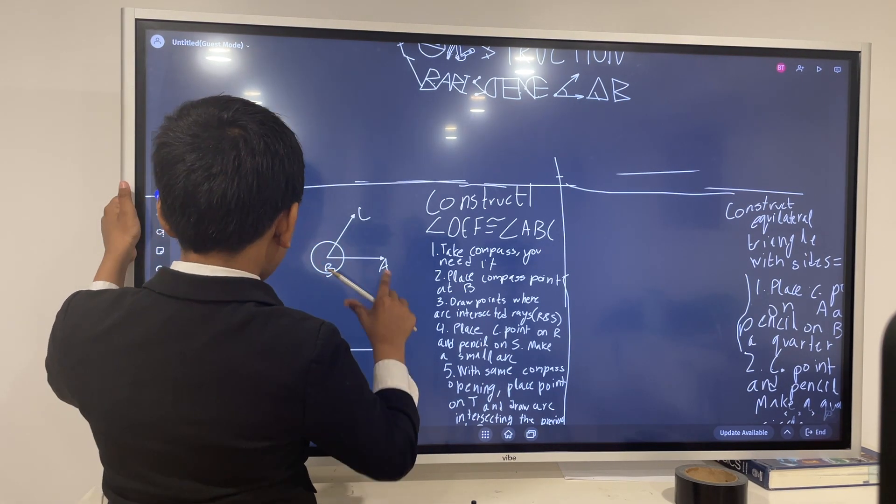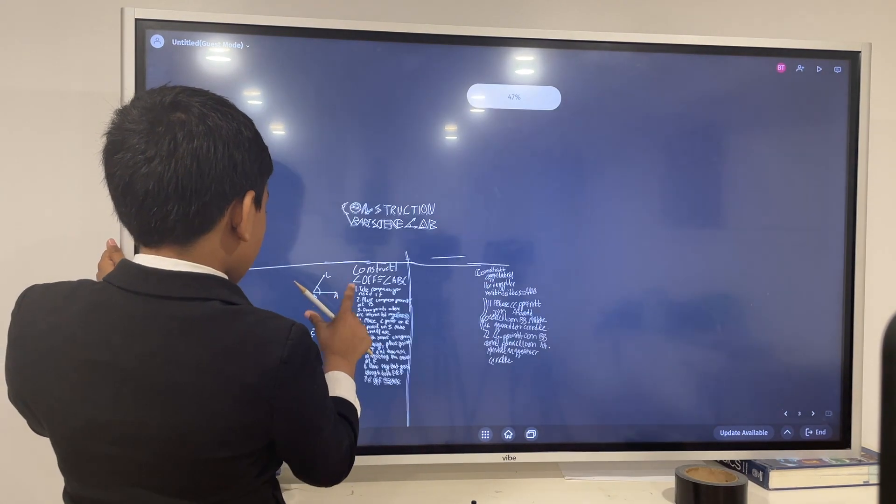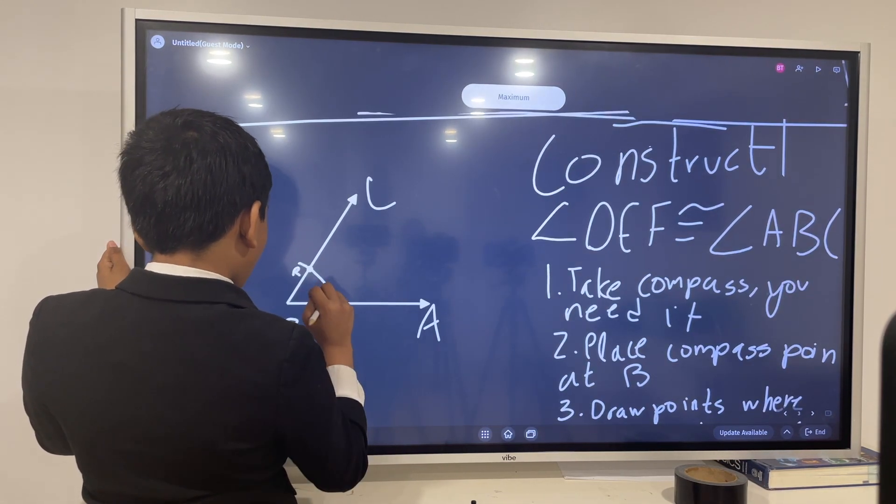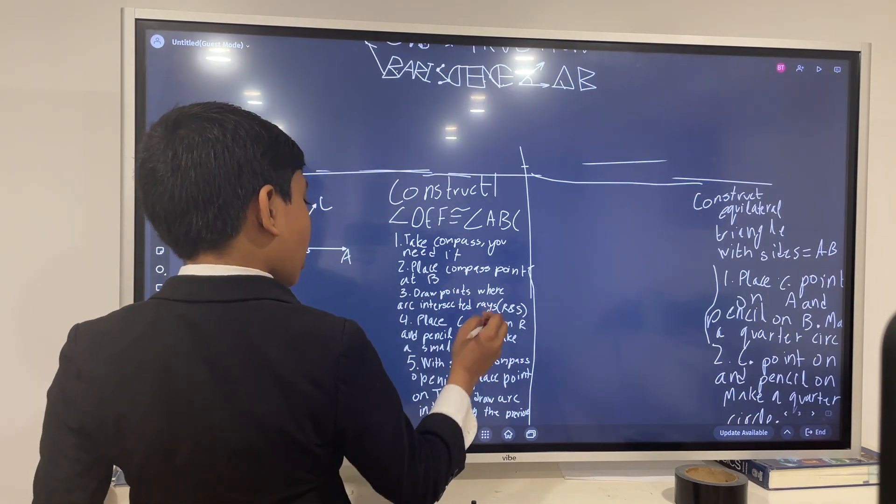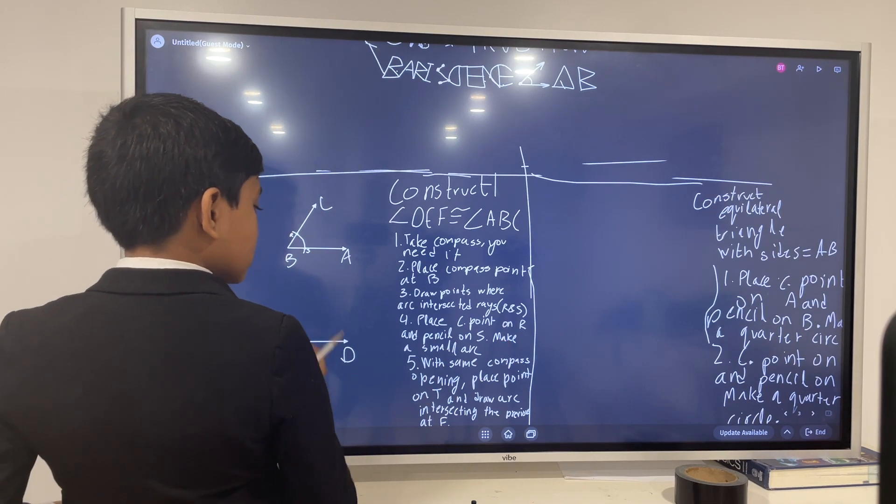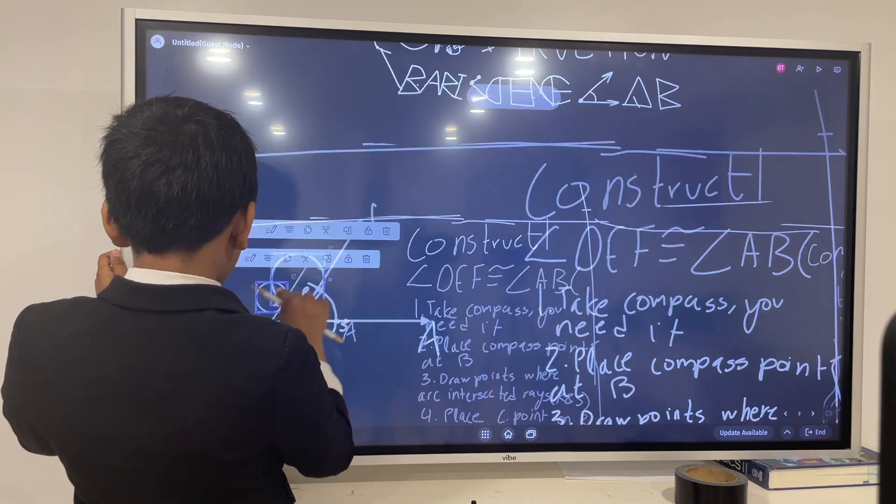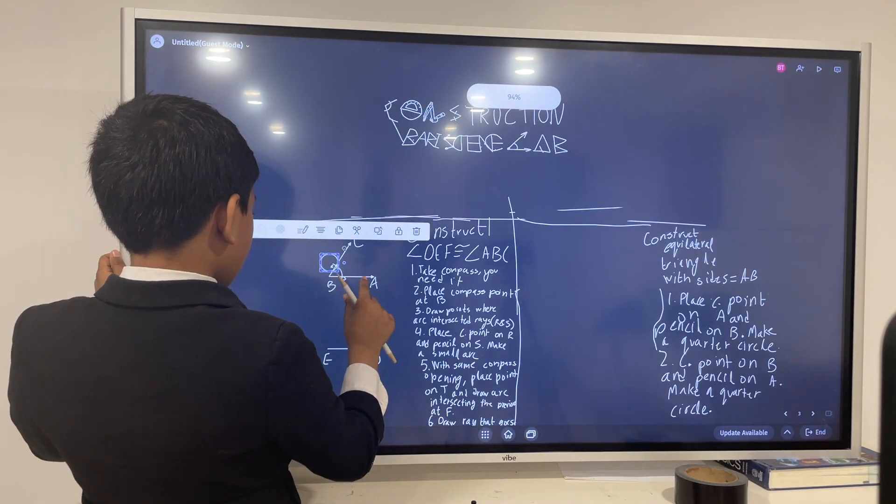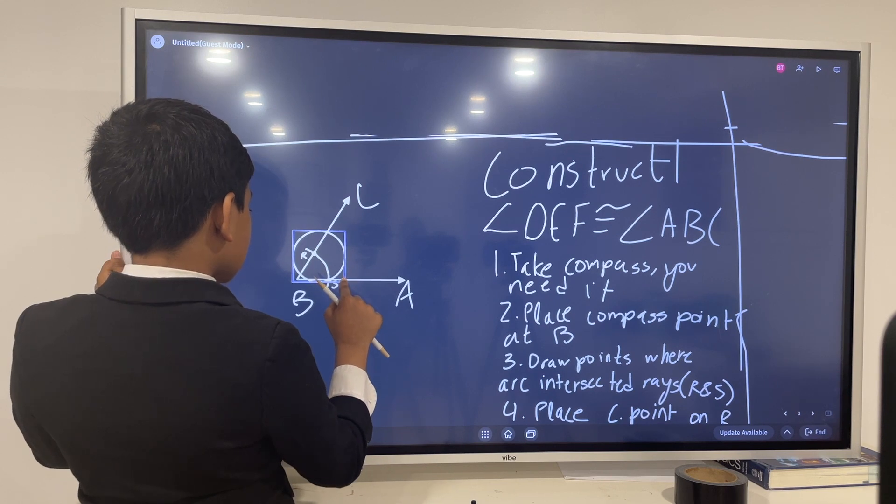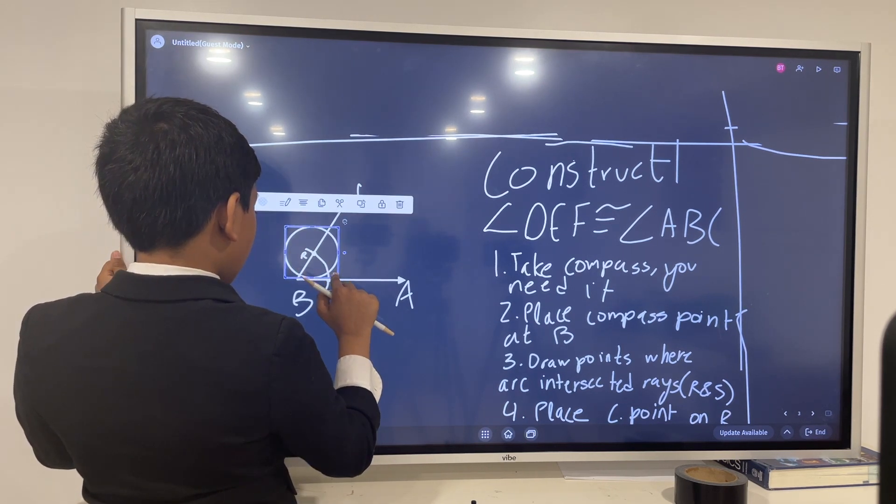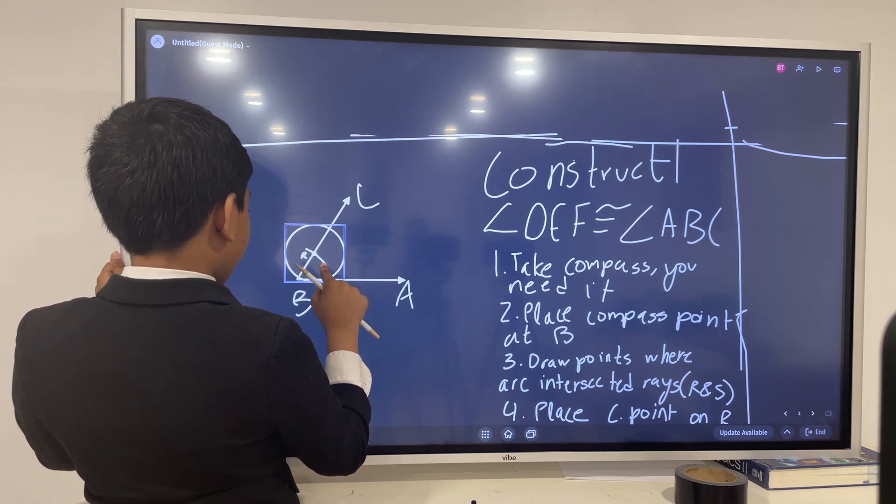So now do the same thing. And where we're intercepted, we'll call this R and this S. So now place the compass point on R and the pencil on S. Make a small arc. So we want a compass point on R, we want our pencil on S. S has to be on the outer circumference.